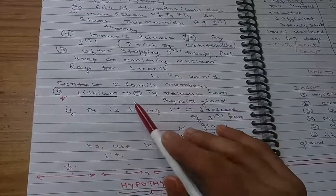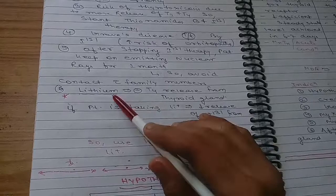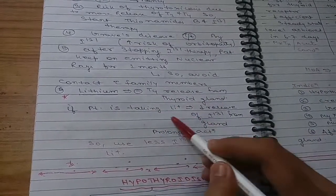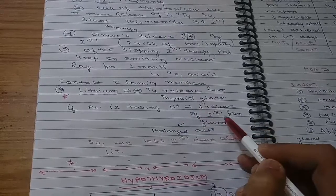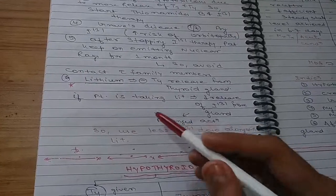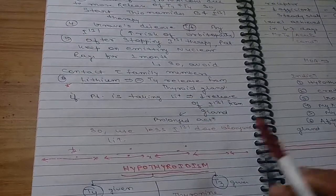Lithium inhibits T4 release from thyroid gland. If patient is taking lithium, that will increase the release of iodine from gland, so there will be prolonged action. So you use less iodine in those along with lithium.